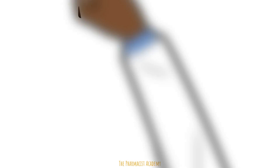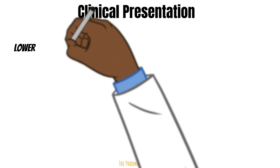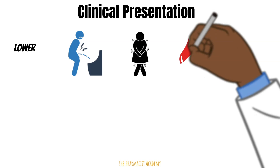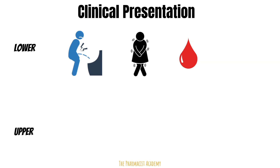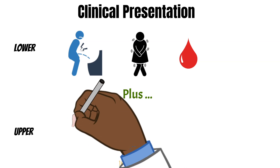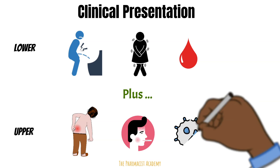Knowing these risk factors helps identify UTIs when patients present with symptoms, which depend on which part of the urinary tract is infected. Lower urinary tract infections may present with pain during urination, urgency, and blood in the urine. Upper urinary tract infection — pyelonephritis — includes those lower UTI symptoms plus lower back pain (also known as flank pain), fever, and an elevated white blood count.